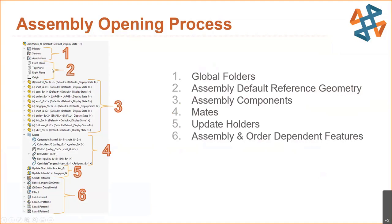Third, we finally see our assembly components — the parts and subassemblies — that's when those get rebuilt. Fourth is mates. Fifth is update holders. And last at number six is assembly and order-dependent features, such as extruded cuts or fillets added at the assembly level. Other things included there would be patterns — for example, if you're patterning hardware, those come in at the very last stage.